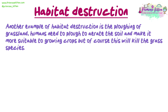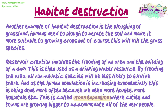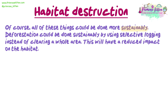Another example of habitat destruction is the ploughing of grassland. Humans need to plough to aerate the soil and make it more suitable for growing crops, but this will kill the grass species. Reservoir creation involves the flooding of an area and the building of a dam, used as a drinking water resource — all non-aquatic species will be less likely to survive. As the human population is increasing exponentially, this is being done more often because we need more houses and hospitals. This is called urban expansion, where cities and towns grow bigger to accommodate new people.